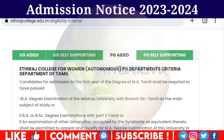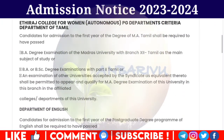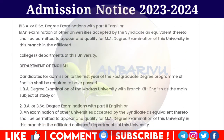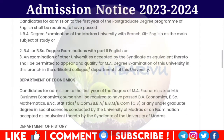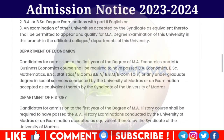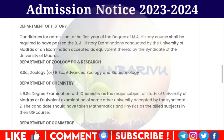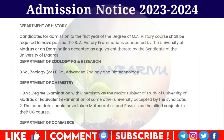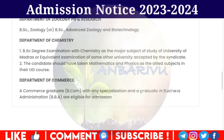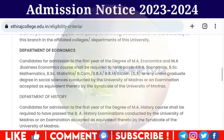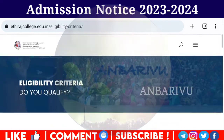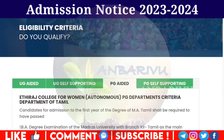The PG aided programs available include: MA English, MA Economics, MSc Zoology, MSc Chemistry, and MCom Commerce. You need to check the eligibility criteria and checkpoints for each of these programs.